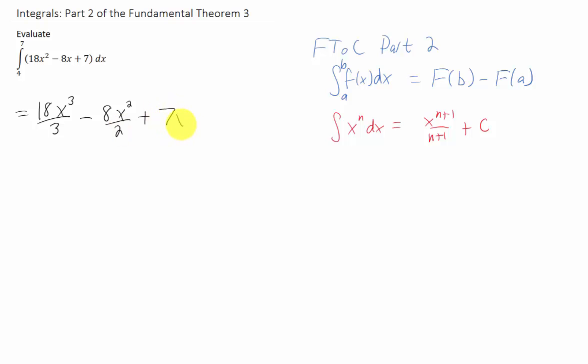And the integral of 7 is just 7x. Technically, we are increasing the power from 0 to 1 and dividing by 1 there. And we're going to evaluate that whole polynomial between x equals 4 and 7. Let's simplify first.